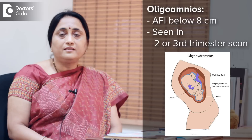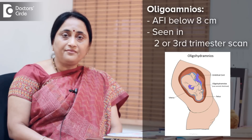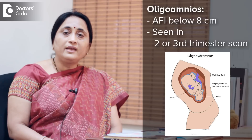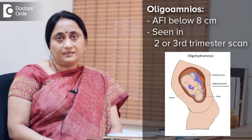Low amniotic fluid is a condition in which the volume of amniotic fluid in the womb goes down. It is denoted by AFI or amniotic fluid index, which is below 8 cm. It is seen in 2nd and 3rd trimester scans, and when it is diagnosed we look into the reasons and try to treat those reasons so that it can remain at whatever level it is or at least increase a bit.